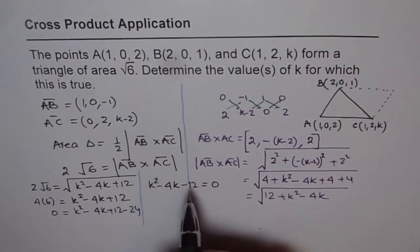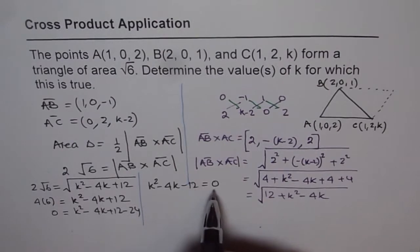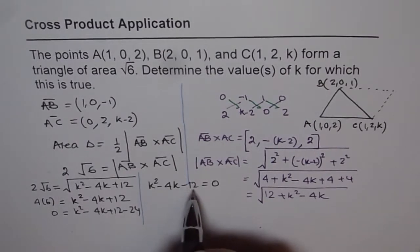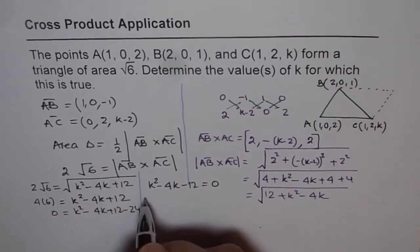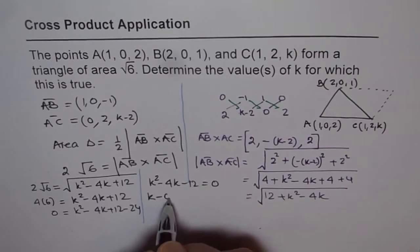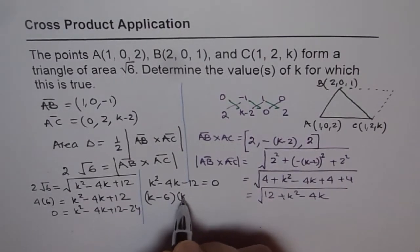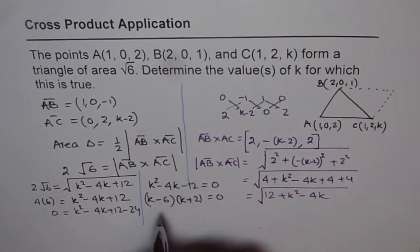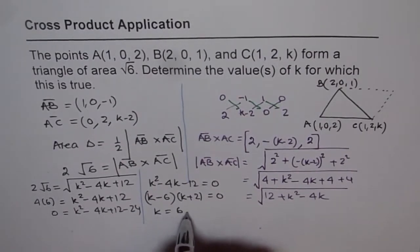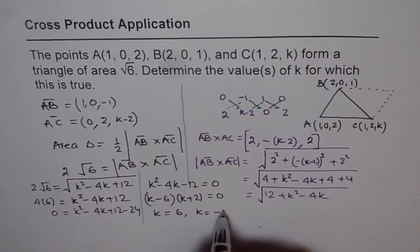Factoring: (k - 6)(k + 2) = 0. So the two values of k that satisfy this are k = 6 or k = -2. That is our answer: k = -2 or k = 6.